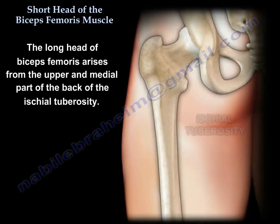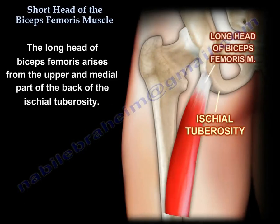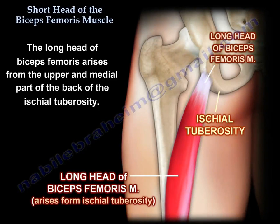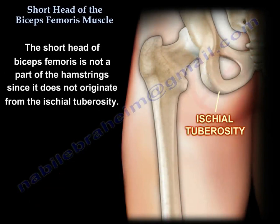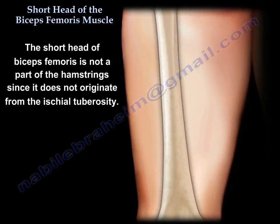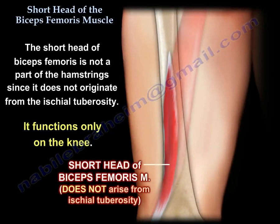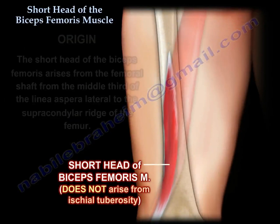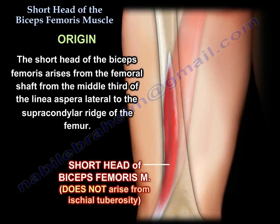The long head of the biceps femoris arises from the upper and medial part of the back of the ischial tuberosity. The short head is not a part of the hamstring since it does not originate from the ischial tuberosity — it functions only on the knee. It arises from the femoral shaft, from the middle third of the linea aspera, lateral to the supracondylar ridge of the femur.